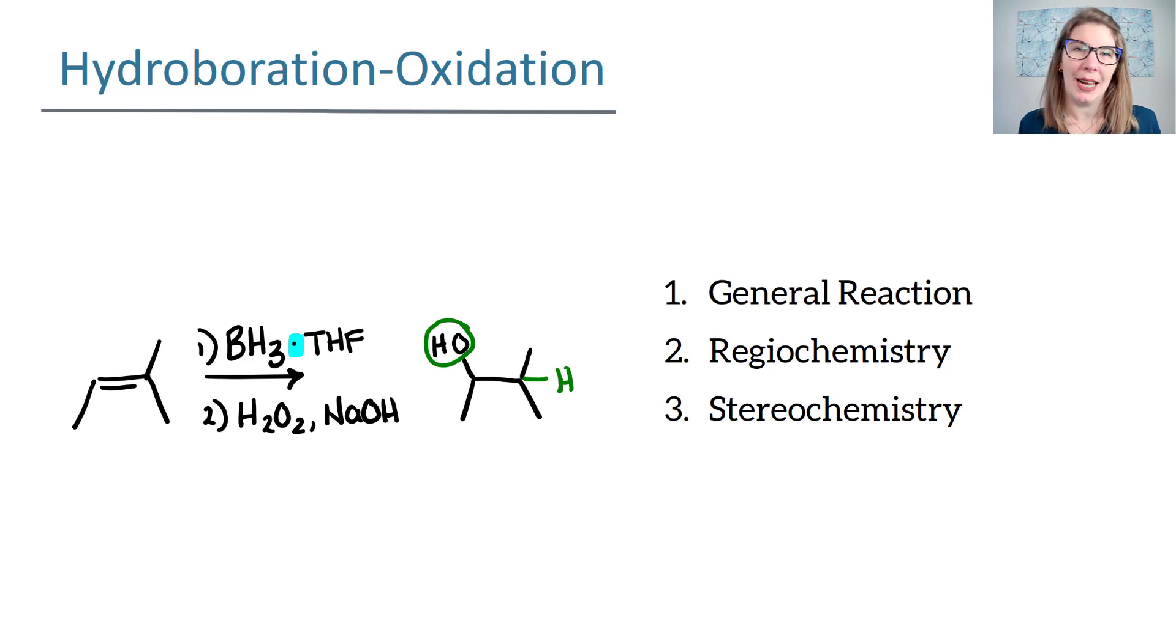This is a complex between BH3 which is called borane and THF which is a solvent. The reason that we do this is because if we didn't, BH3 is so reactive that it actually reacts with itself to create B2H6 which is called diborane. So you'll see this BH3·THF and this is your first part of the reaction.